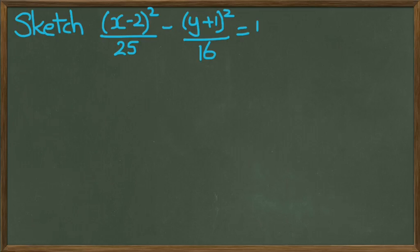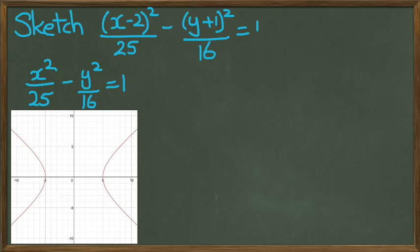Okay. In this question, I've asked you to sketch x minus 2 squared over 25 minus y plus 1 squared over 16 equals 1. Now you'll notice that the denominators a squared and b squared were the same as the previous example. So, what I'm going to do is I'm going to look at, I'm going to just show you what the previous example looked like with our two asymptotes. Now, because of the x minus 2 and y plus 1, the center is now going to move.